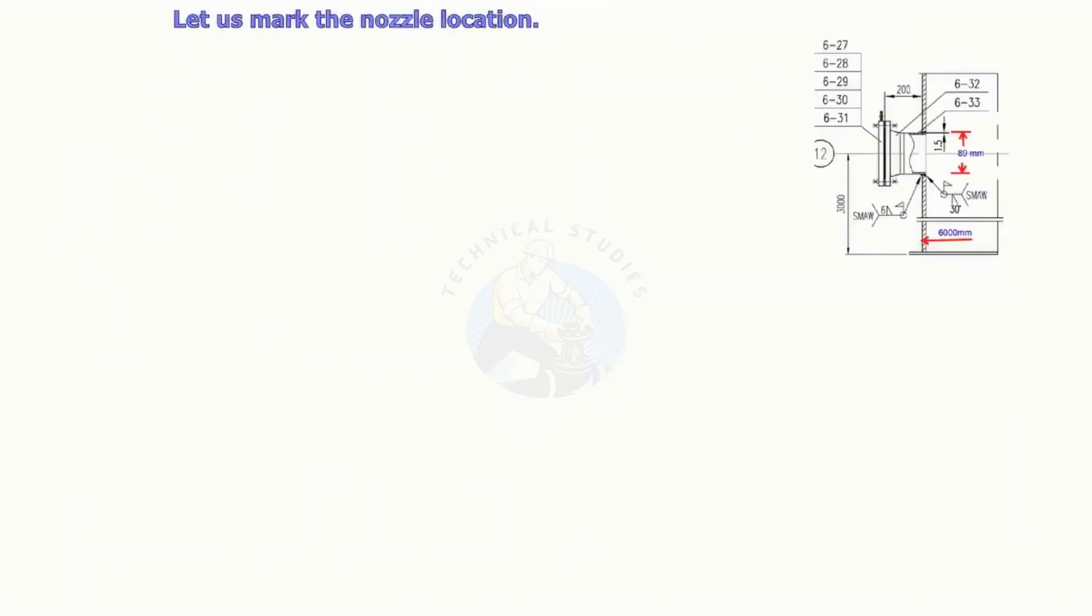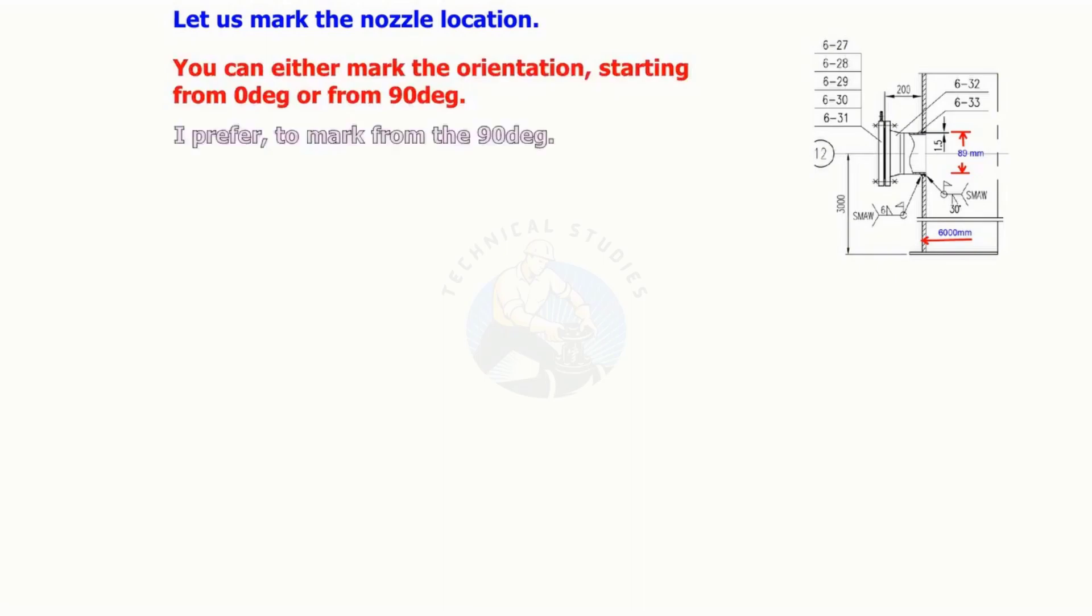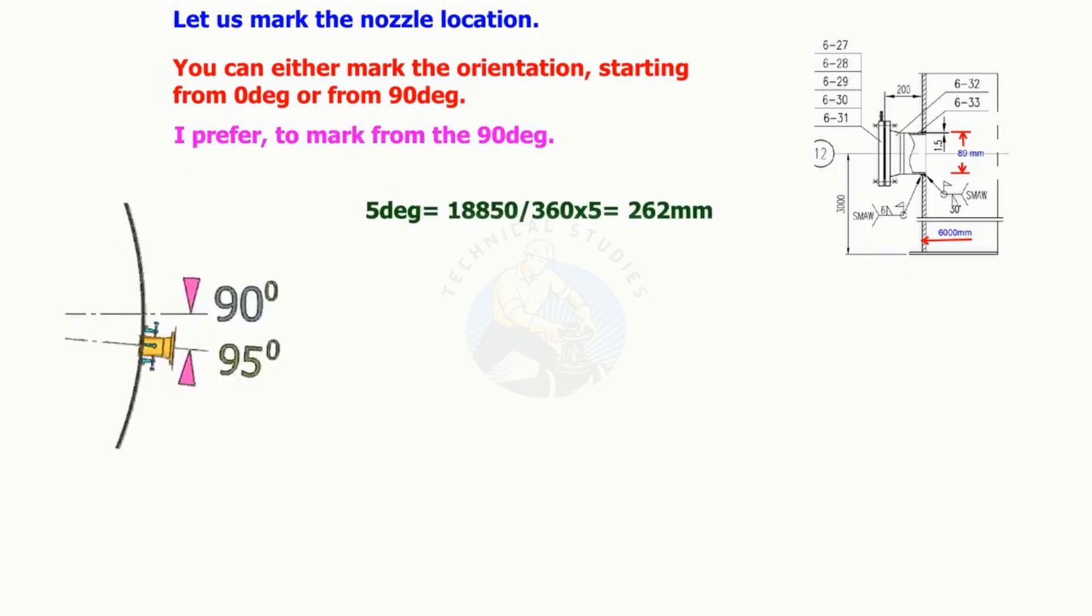Let us mark the nozzle location. You can either mark the orientation starting from 0 degrees or from 90 degrees. I suggest to mark from 90 degrees. As we calculated earlier, 5 degrees is equal to 262 millimeters.